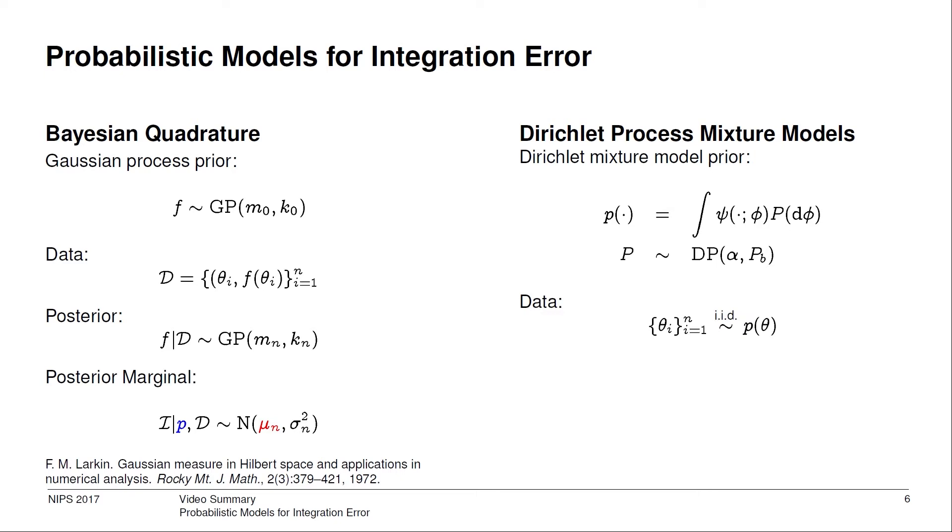The values theta j are modeled as iid draws from p. The posterior then has a particularly nice characterization as a linear combination of side densities. The wj and phij can be sampled via a construction called stick breaking.